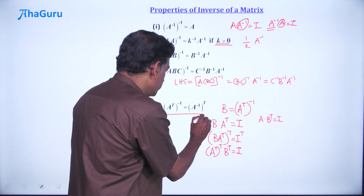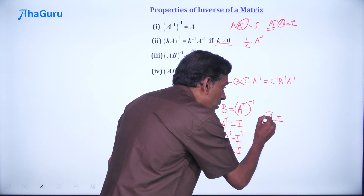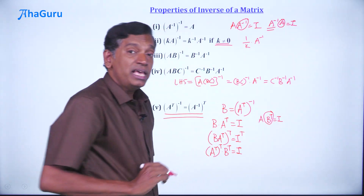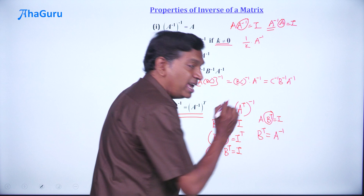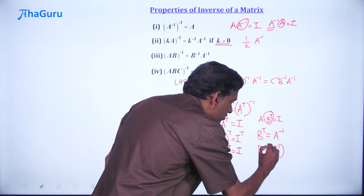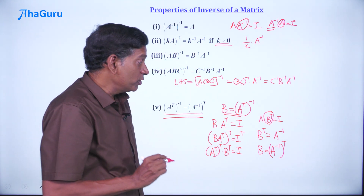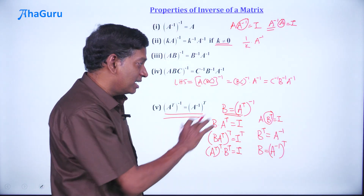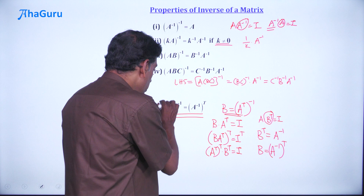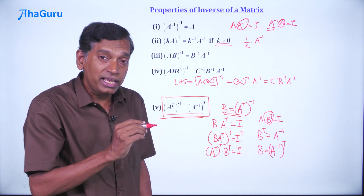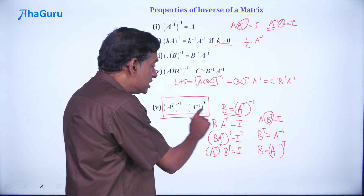Now, if A times B transpose equals I, we can claim that B transpose is A inverse. Taking transpose on both sides: B equals A inverse transpose. But B was originally defined as A transpose inverse. Therefore, beautifully, A transpose inverse equals A inverse transpose. These are all perfectly legal, valid operations. The conclusion is: when you perform transpose and inverse on a matrix, you can change the order of these two operations and the result is the same.